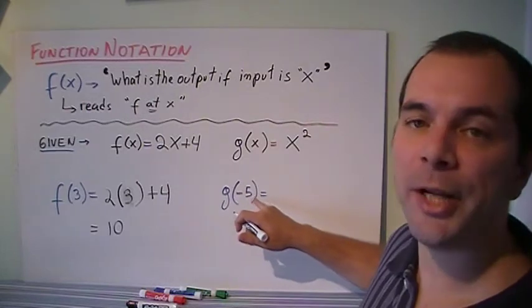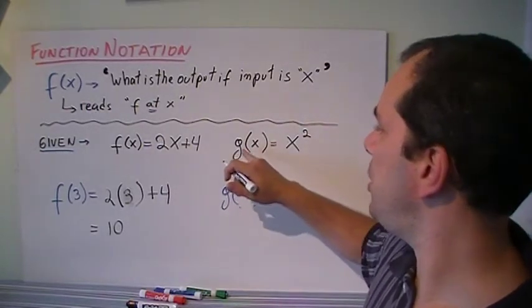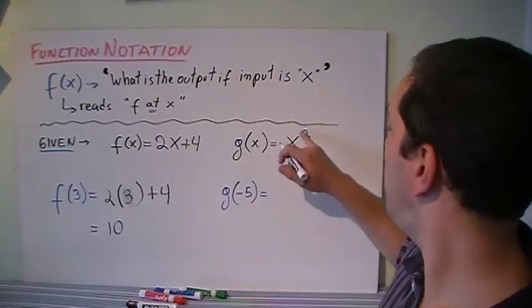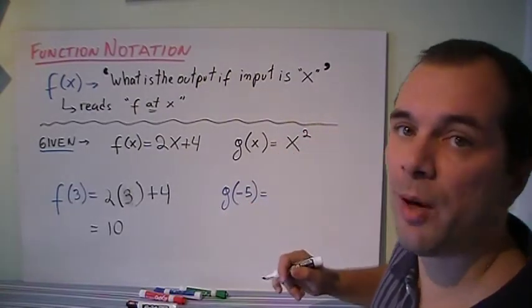g at minus 5. What does this mean? It means on the function g, what is the output if the input is minus 5? Well the function g is just x squared and that was given.